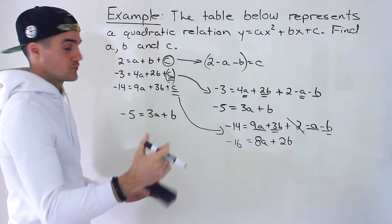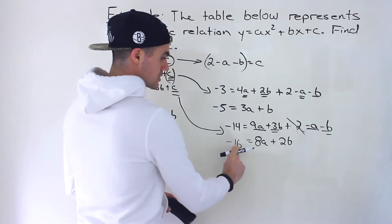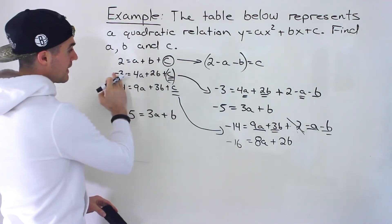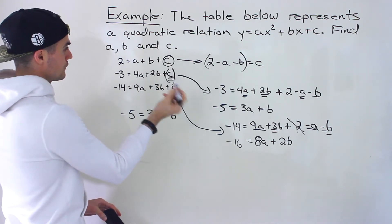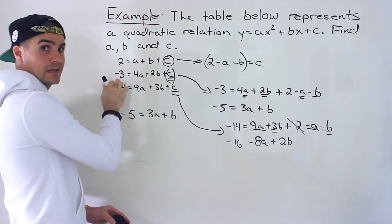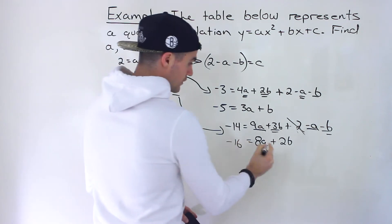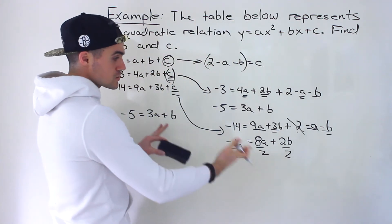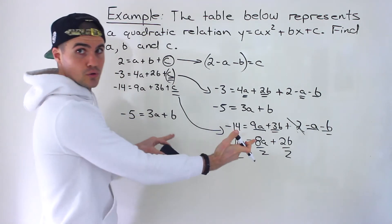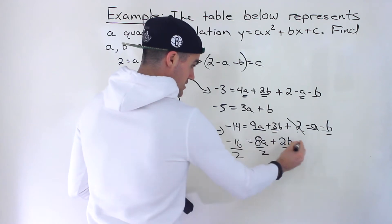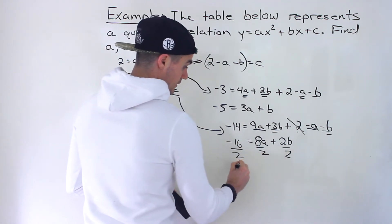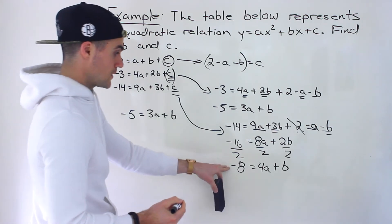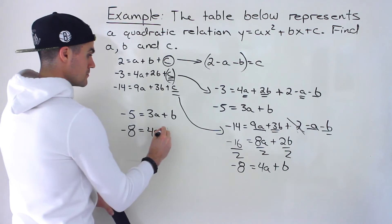Now we have two equations with only a and b. Notice we can simplify the second equation by dividing everything by 2 — I like to look out for those opportunities to avoid fractions. So we get negative 8 equals 4a plus b. Now we have these two simpler equations to work with: negative 5 equals 3a plus b, and negative 8 equals 4a plus b.